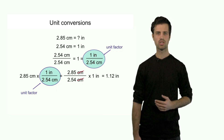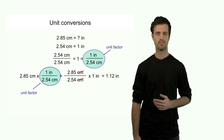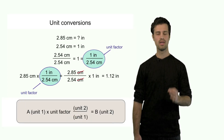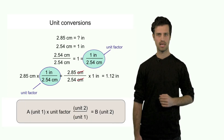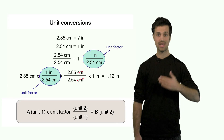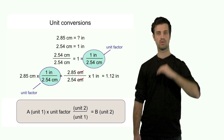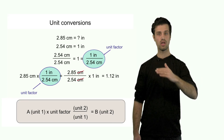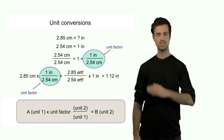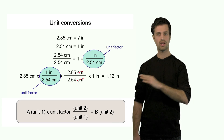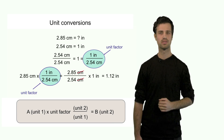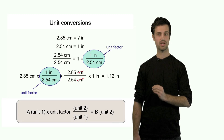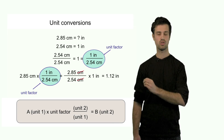So the general rule is as follows: if I have a number a expressed in unit 1, and I multiply that with a unit factor that has unit 2 in the numerator and unit 1 in the denominator, then unit 1is going to cross out, and my final answer b is going to be expressed in unit 2.